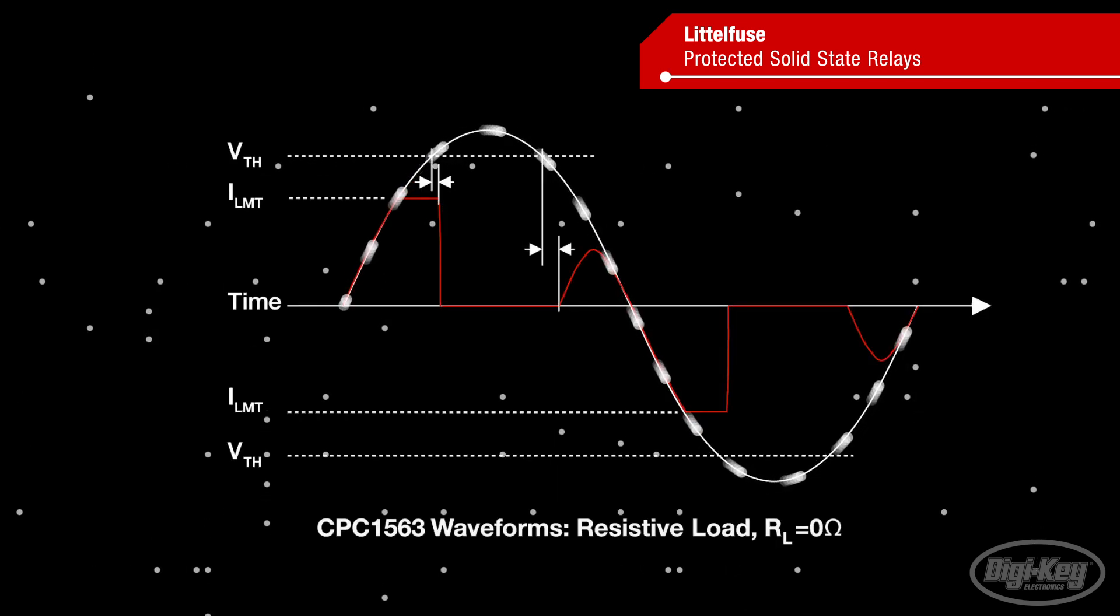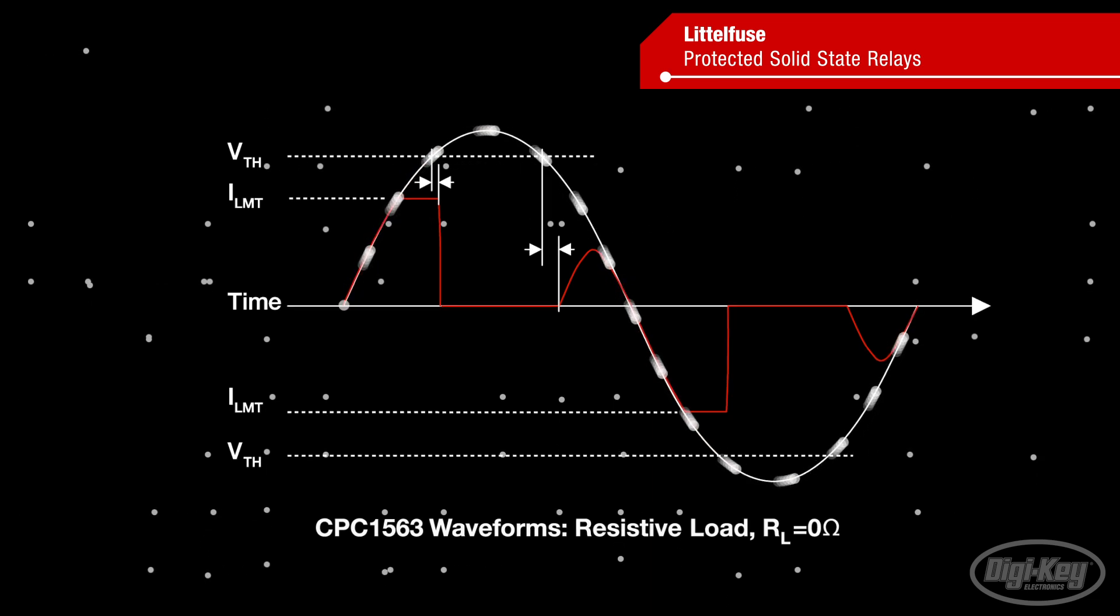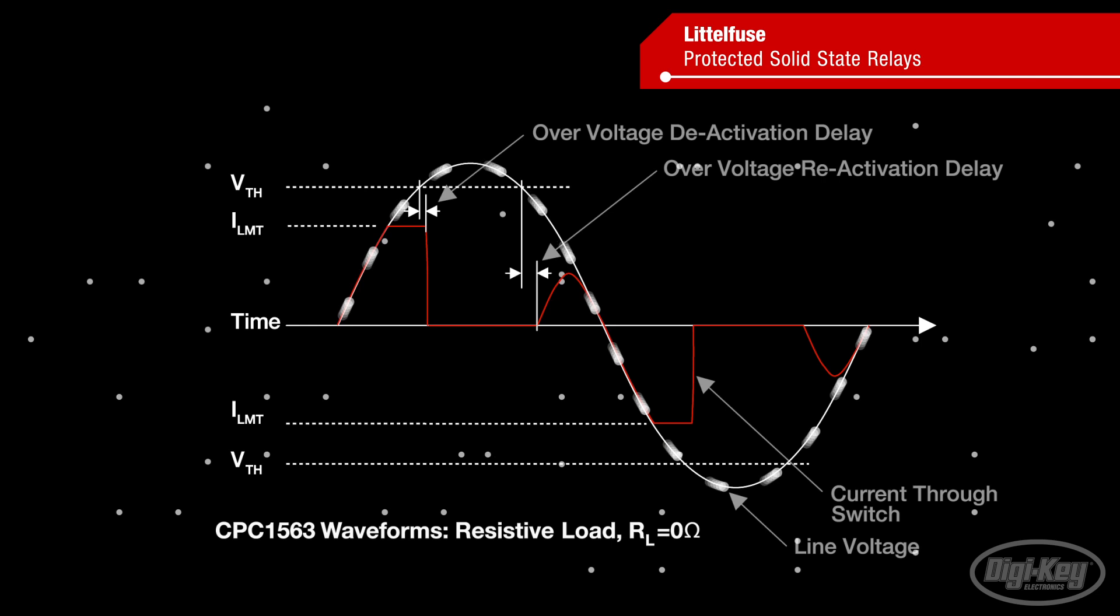Select parts include voltage-triggered shutdown as an additional protection mechanism. While current limiting is active, if the voltage across the load terminals exceeds the overvoltage threshold, the load current will be reduced to 100 microamps until the load voltage drops below the overvoltage threshold.